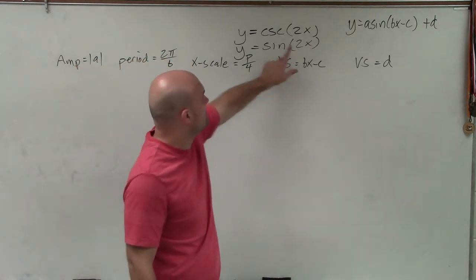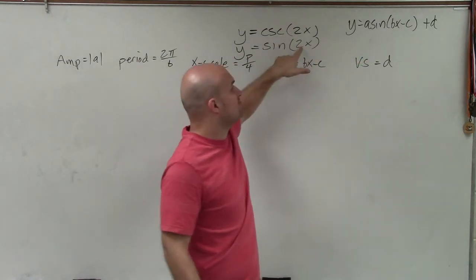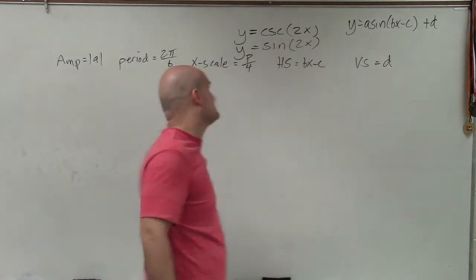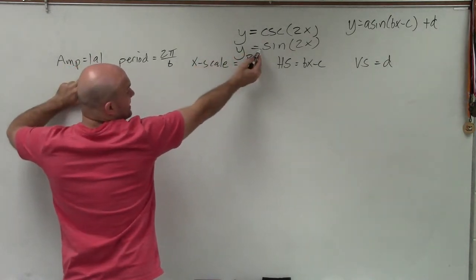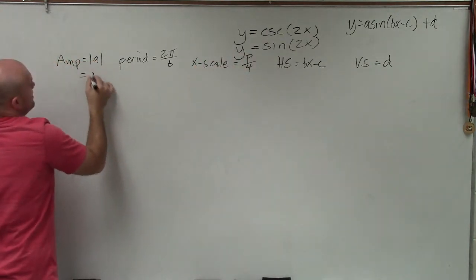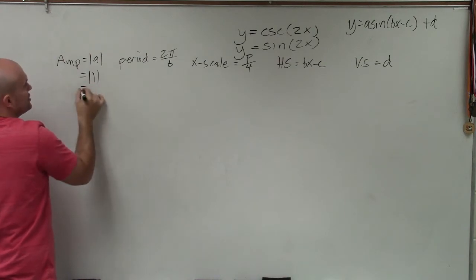And you can see the only number that we actually have a value for other than 1 is b, because that's b multiplied by our x. So a, if we look at this, I'm not multiplying any number by 1. So my amplitude is absolute value of 1, which is just equal to 1.